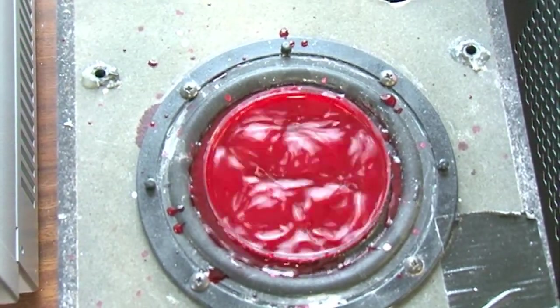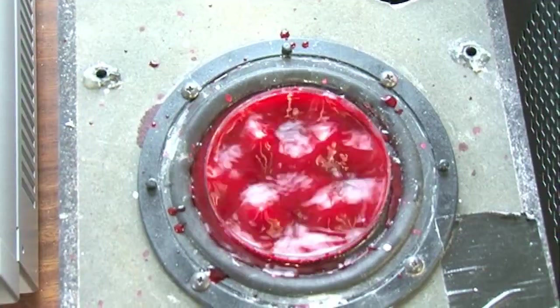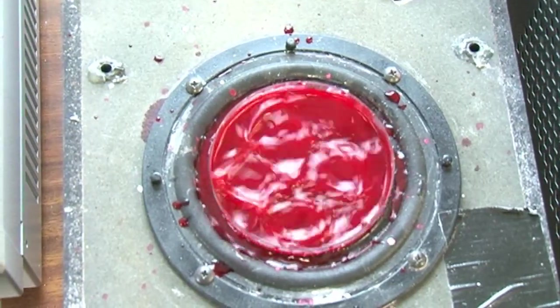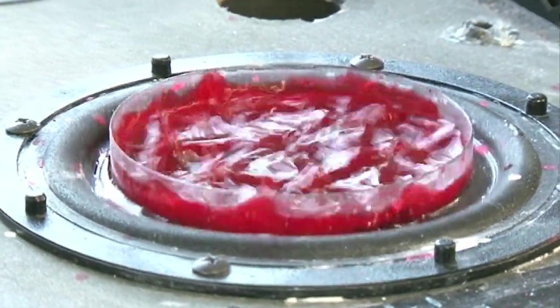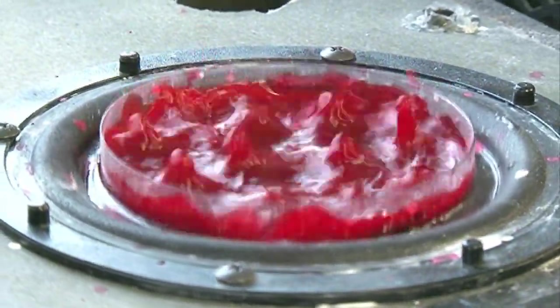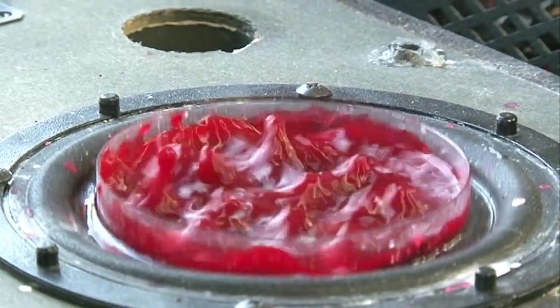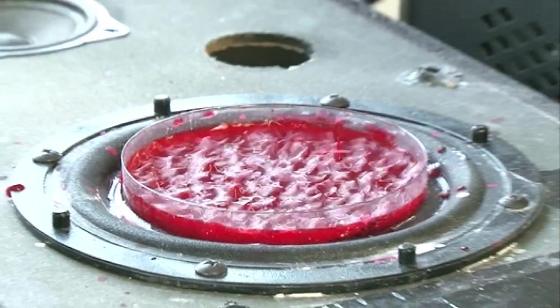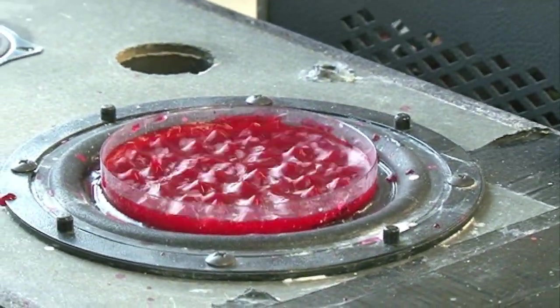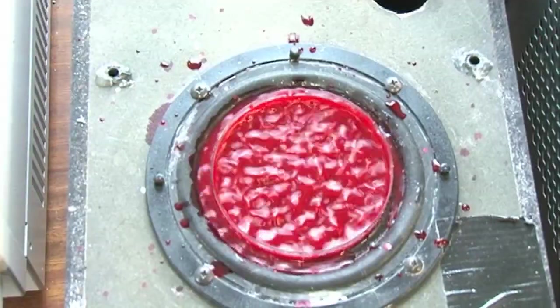As we increase the frequency, we get more and more of these form in the dish, and some of them, particularly around here, actually physically force the liquid out of the tray. You can see now there's loads of these tiny little towers almost moving around in the dish.